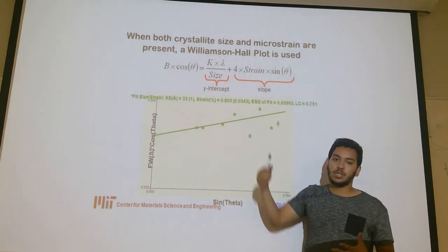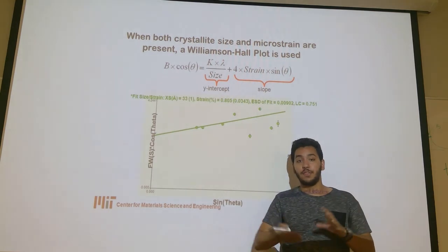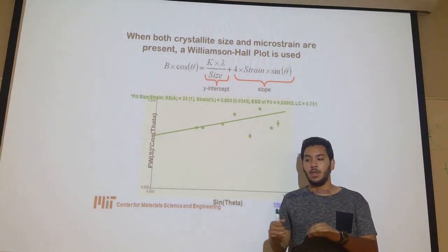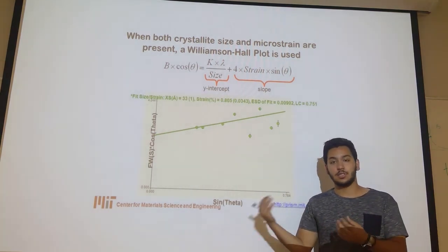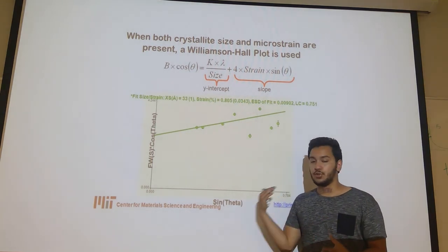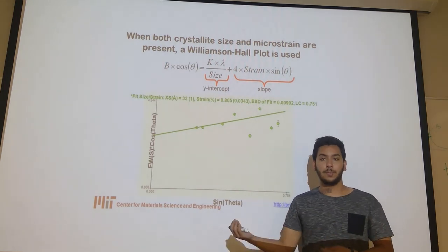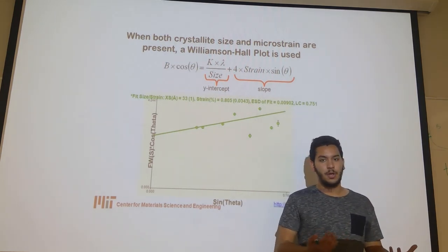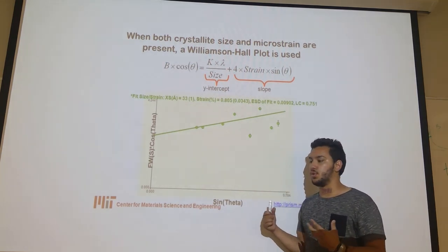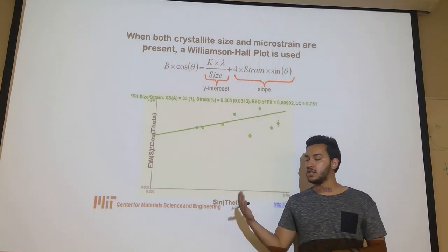With all this, we can obtain information from the width of the peak that talks about how big the crystallites are in the solid and what is the structure. And why do we need this? Because through this information, we can further manipulate the solids. We can create better materials to use for other technological advances.